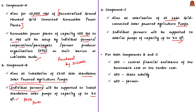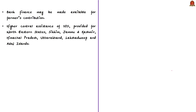The scheme aims to add a solar capacity of about 26 gigawatts by 2022. The total central financial support under this scheme would be around ₹34,422 crores. For both Components B and C, central financial assistance of 30% of the benchmark cost or tender cost, whichever is lower, will be provided. The state government will give a subsidy of 30%, and the remaining 40% will be provided by the farmer. Bank finance may be made available so that the farmer initially pays only 10% and the rest as a loan.